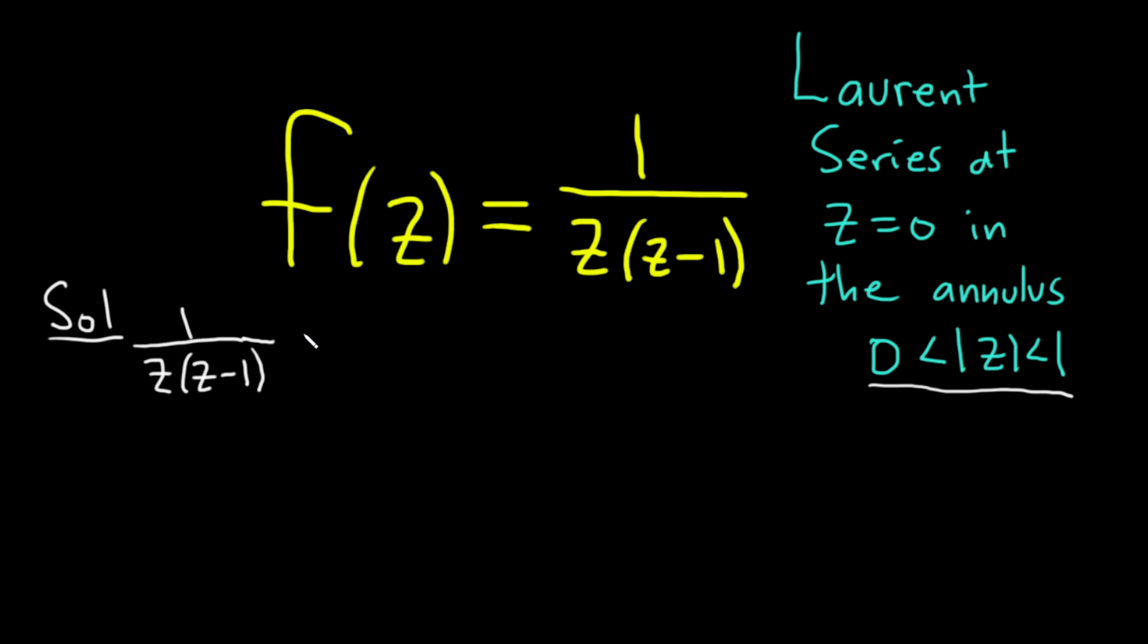And what we can do here is we can use partial fractions. We can write this as A over z plus B over z minus 1. And now we can use the method of partial fractions to find A and B. I'm going to use the cover-up method because it's very easy and quick.